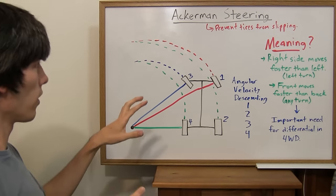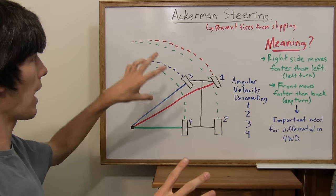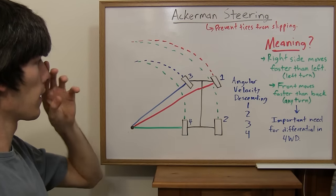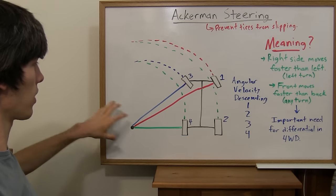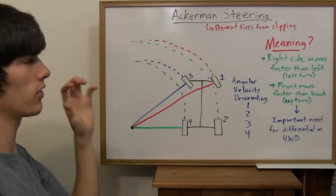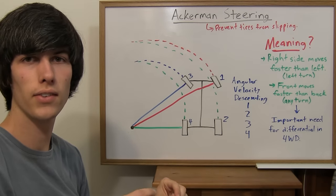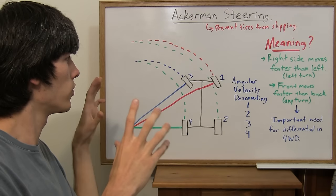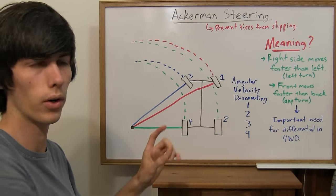What's happening here? Back before Ackermann steering was around, some of the tires would slip because they had come to a different point. Ackermann steering exists so that your tires do not slip when you go around a corner.